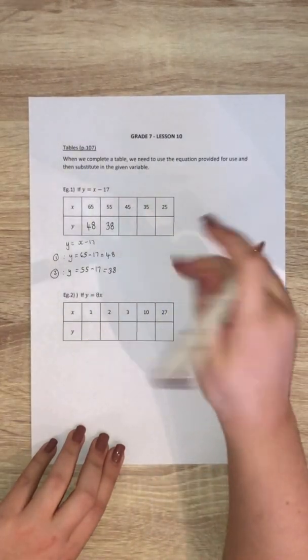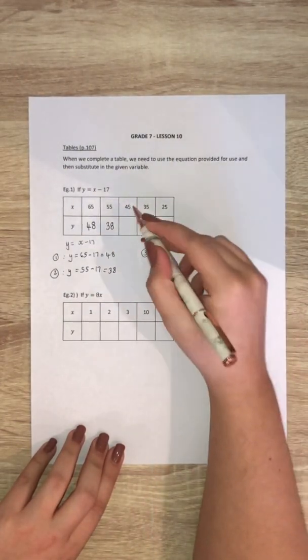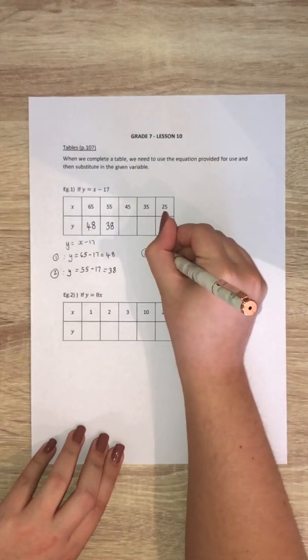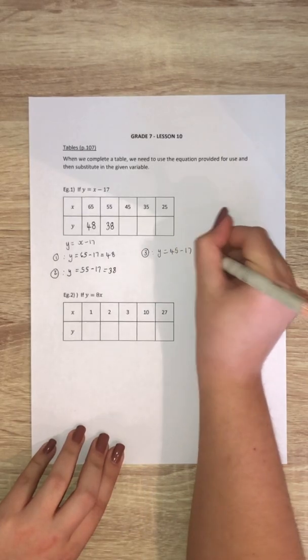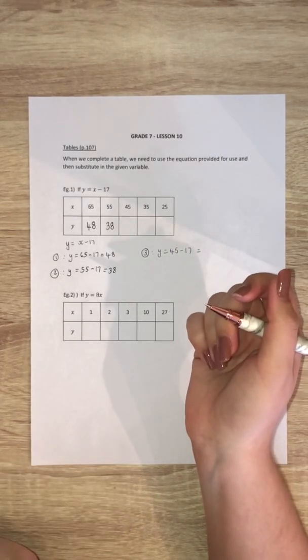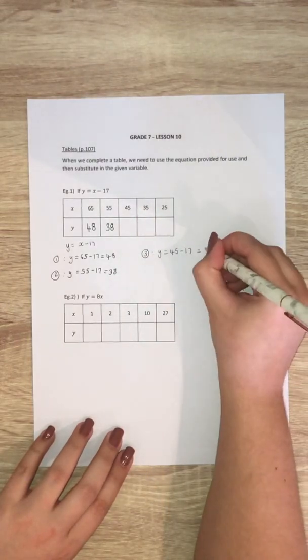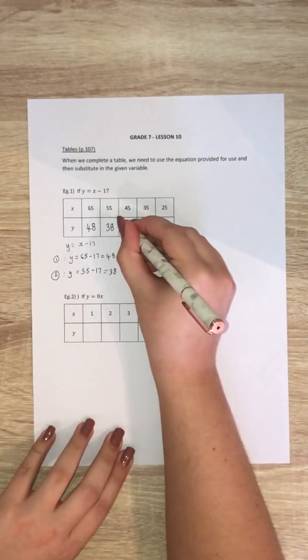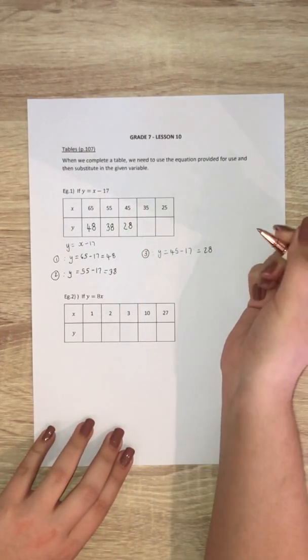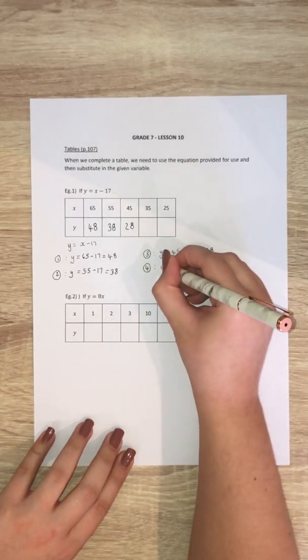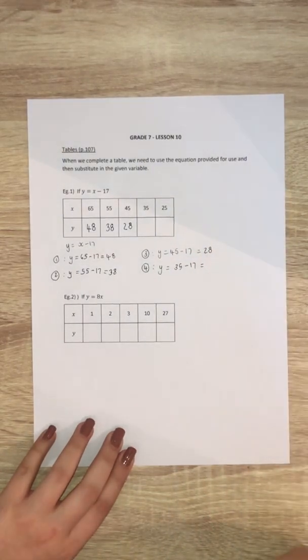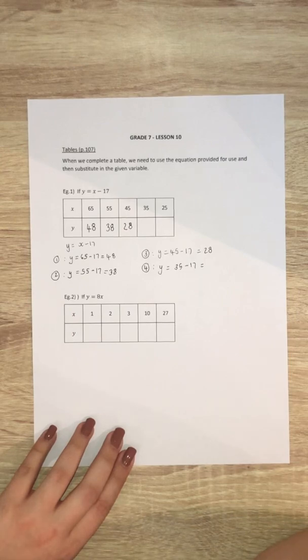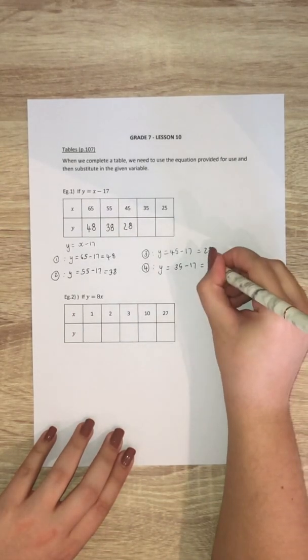Then you do the same for all of them. The third one my x value is 45, so it will be 45 minus 17. 45 minus 10 is 35 minus 7 is 28. Then the next one, same thing we substitute in x which is 35 minus 17. 35 minus 10 is 25, minus 7 is 18.